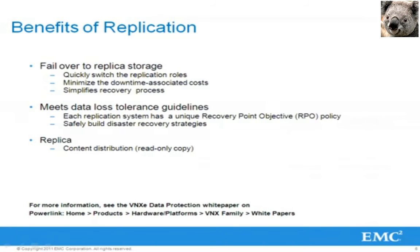There are many benefits for implementing replication in your network environment. Replication allows the administrator to quickly switch the roles of each replication pair so that the replica storage object can resume data sharing responsibilities in place of the downed primary storage object. Replication also helps minimize the downtime-associated costs should there be a system failure, and simplifies the steps to recover from that failure. Each replication session may have different requirements in terms of tolerance for loss of data if the session is interrupted.